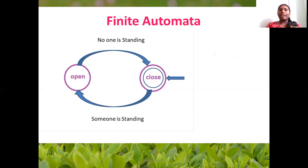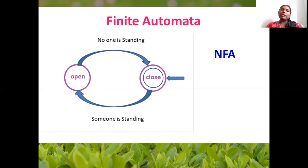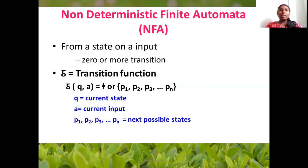Now we have defined NFA — Non-Deterministic Finite Automator. Non-Deterministic means not properly defined. In a situation, we cannot always define what needs to happen. If there is no defined transition, there are many possibilities. If there is a non-deterministic transition, that is NFA. We can define a state and input, and we can define a transition — zero or more transitions.